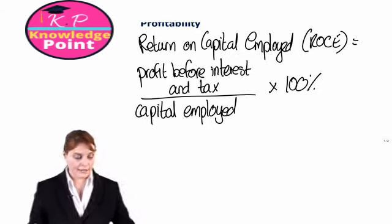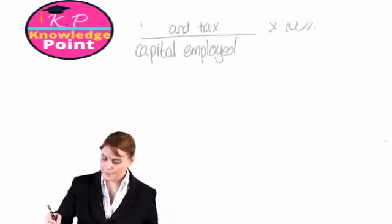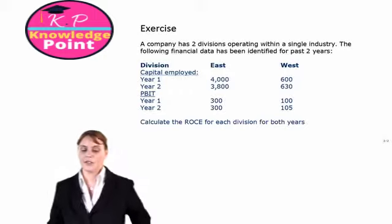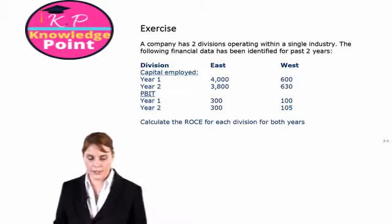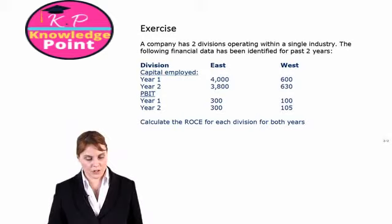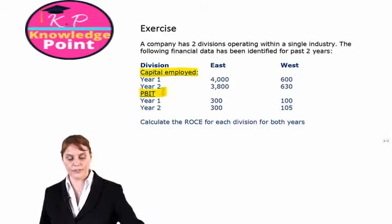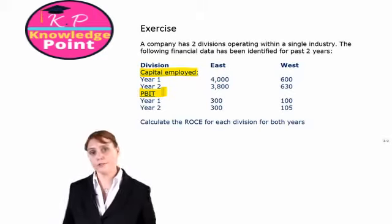So what we'll do now is look at an exercise. A company has two divisions operating within a single industry, and we have financial information for the past two years. So we have two divisions, East and West, and we've been given their capital employed and their profit before interest and tax figures for the two years. Very straightforward, all we have to do is calculate the return on capital employed figures for each division for both years.